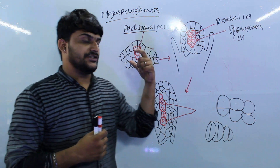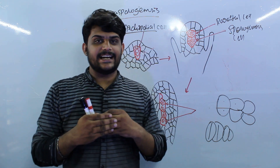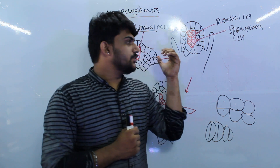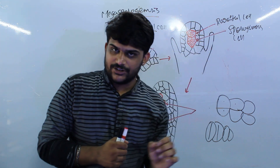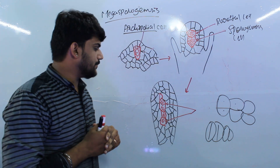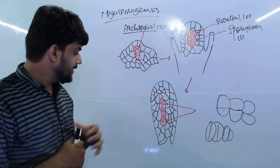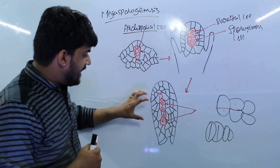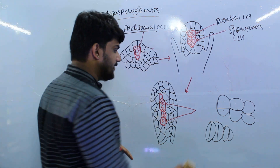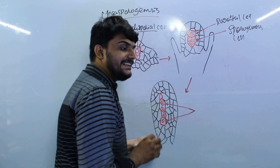The sporogenous cell acts as the cell that will become the Megaspore mother cell in the future. While the parietal cell undergoes anticlinal division, the sporogenous cell accumulates a large amount of cytoplasm and then undergoes periclinal division, giving us four different cells, which are known as the Megaspore mother cells, or four tetrads.